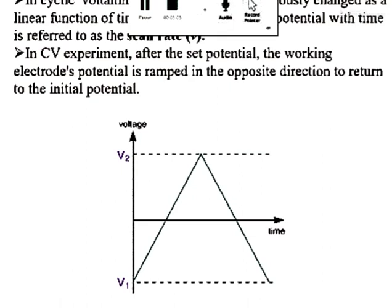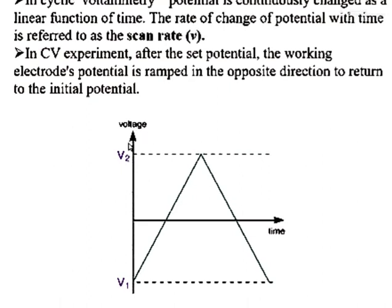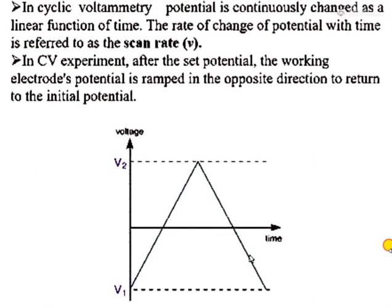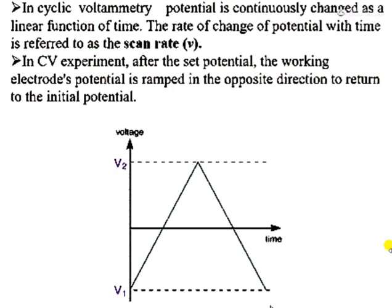In cyclic voltammetry, the potential is swept in a cyclic fashion. If you first want to reduce the analyte, you decrease the potential, reach a certain potential, and then return to the initial potential. If instead you want to first oxidize the analyte and then reduce it, you go to a positive potential to oxidize the analyte and then sweep to a negative potential.